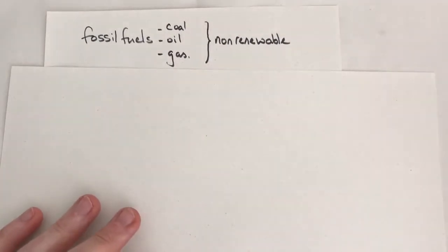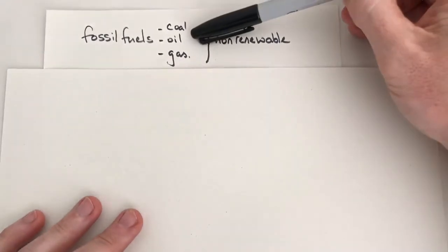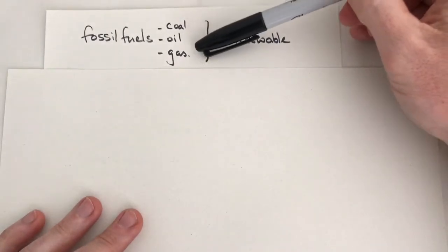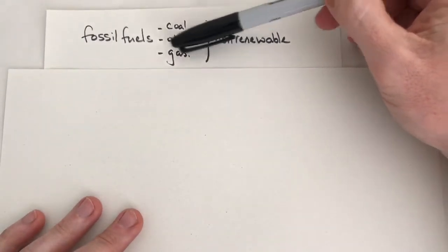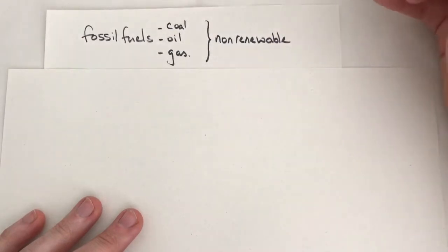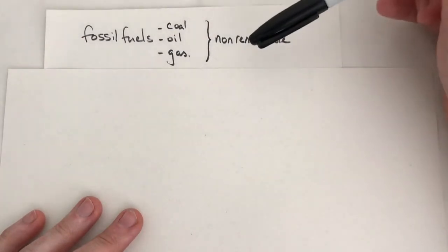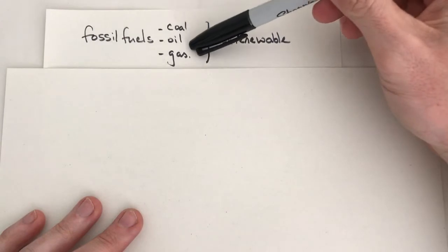So fossil fuels can be categorized as coal, oil, and gas. These are all considered fossil fuels because they are formed from the remains of plants and animals that died millions of years ago and then formed these products.